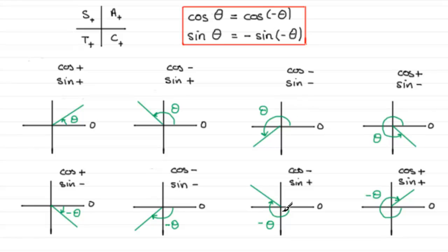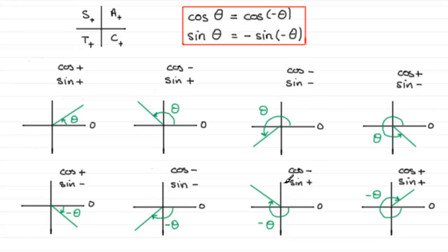For this reflex angle in the third quadrant, the cosine is negative because only tan is positive there. Reversing the angle takes us to the second quadrant where cosine is again negative, so both return exactly the same answer — cos theta equals cosine minus theta. For sine, the sine in the third quadrant is negative, but reversing it to the second quadrant gives a positive sine. They have opposite signs, so to make them equal I just negate the answer.